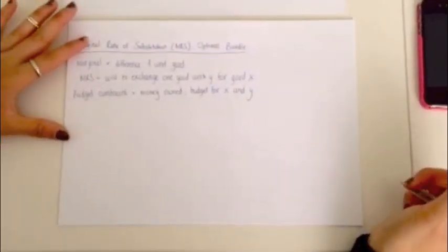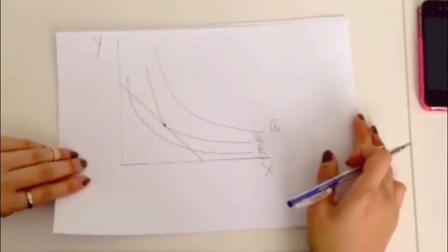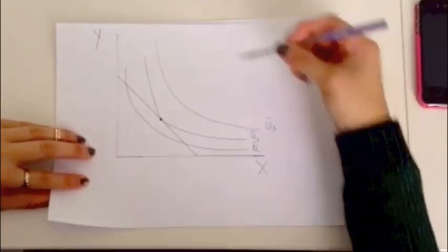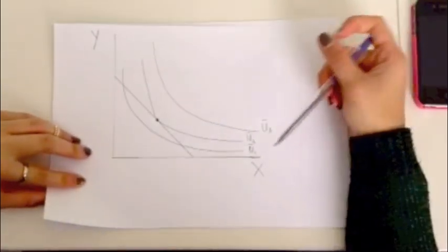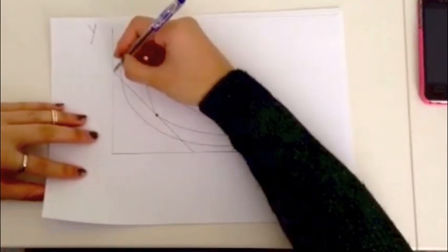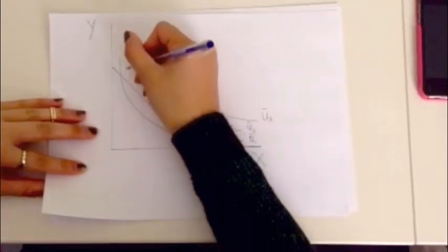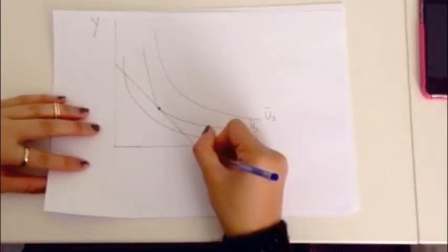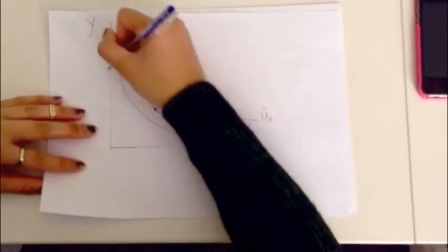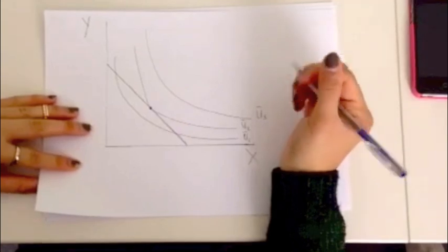And then, so if we put and show this on a graph, if you have here on the graph, we have Y on the Y axis and good Y and good X on the X axis. Now, this diagonal line going from Y to X, that is your budget constraint. So on that line and that entire area under your line are all your affordable bundles, all the sets of good X and good Y that you can buy.